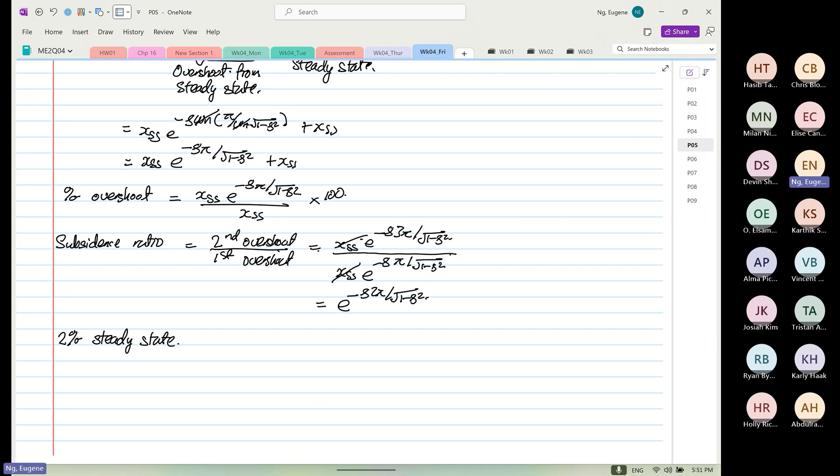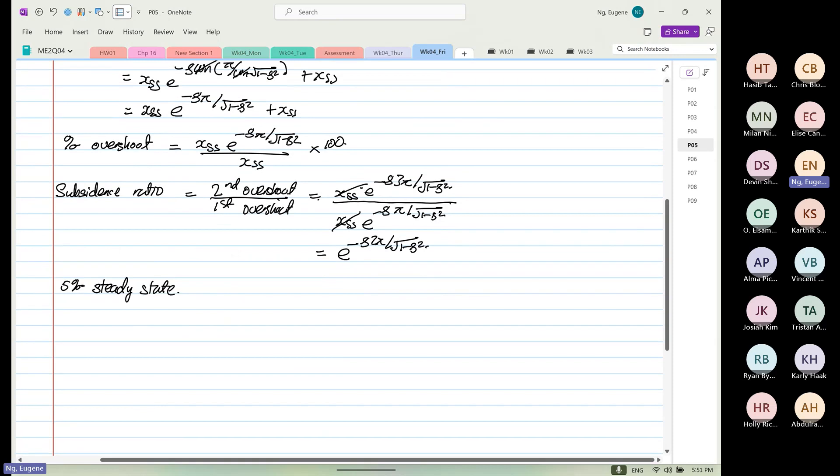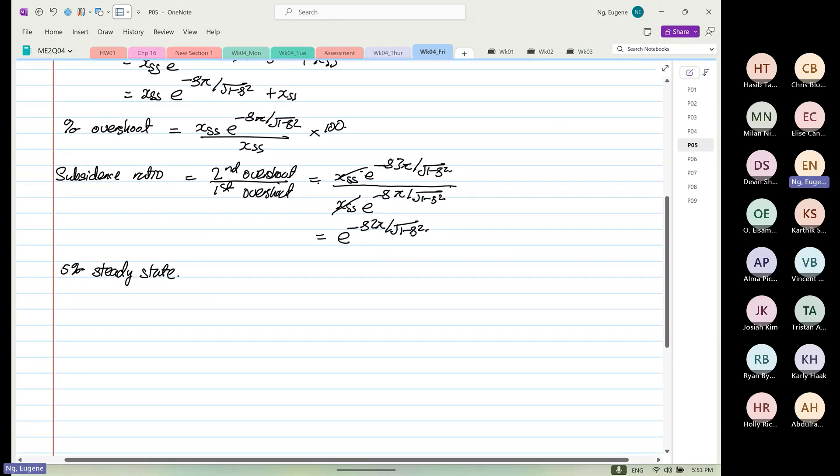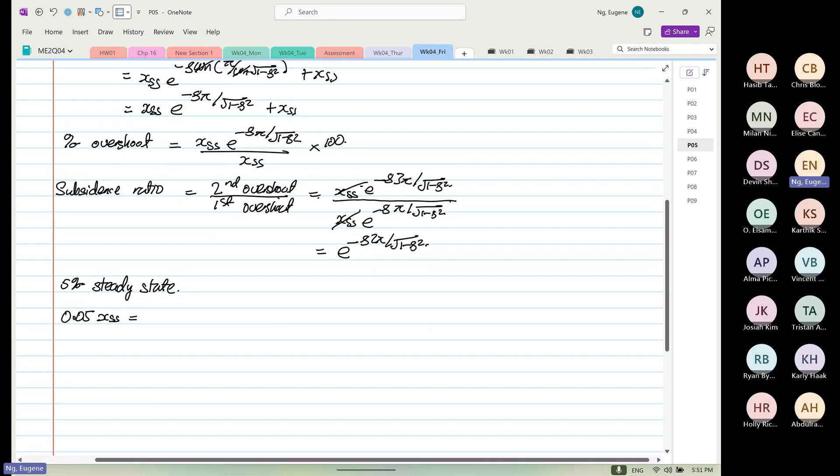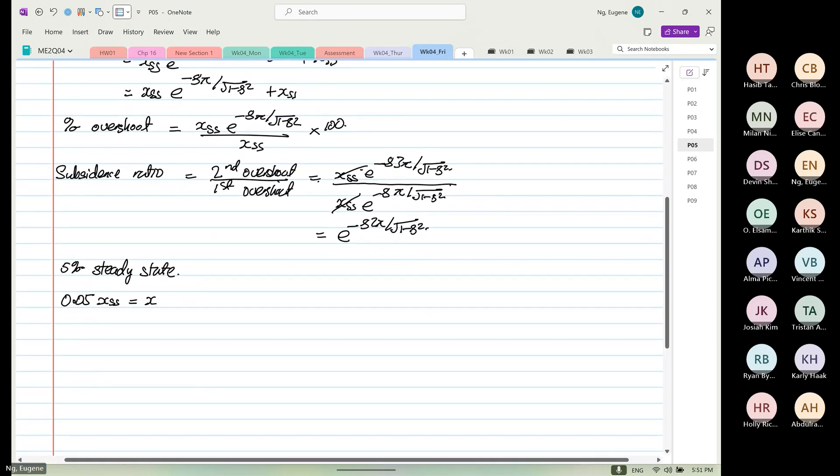So let's do something different. Let's look at 5% steady state. So in the steady state, 0.05 times x_ss is equal to x_ss times e to the minus zeta omega_n t_s. We don't care about the sign. We don't care about the sign because we want to know the magnitude.